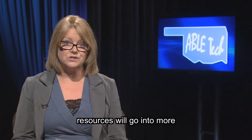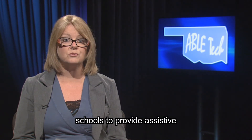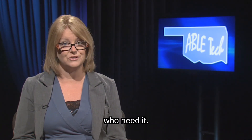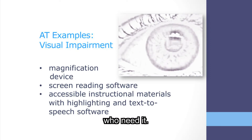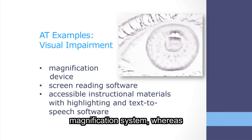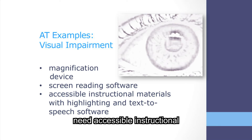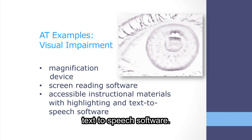Other ABLE Tech videos and resources will go into more detail on the laws and regulations that require schools to provide assistive technology to students who need it. Starting off with visual impairment, a student with some useful vision may need a relatively low-tech magnification system, whereas a student with little-to-no vision may need high-tech screen reading software. Additionally, a student with visual impairment may need accessible instructional materials which require the use of an assistive technology device with text-to-speech software.